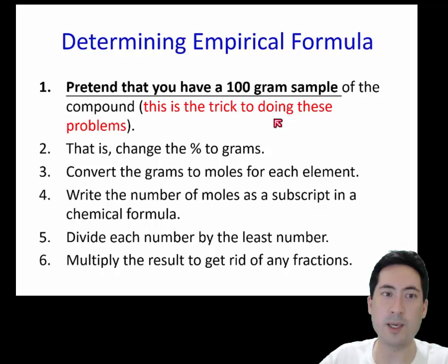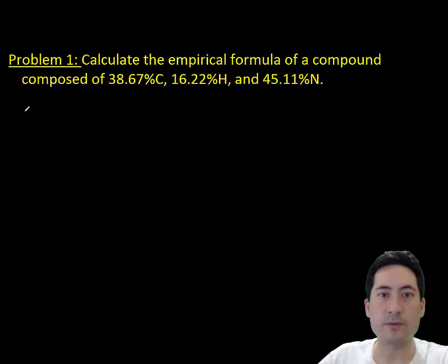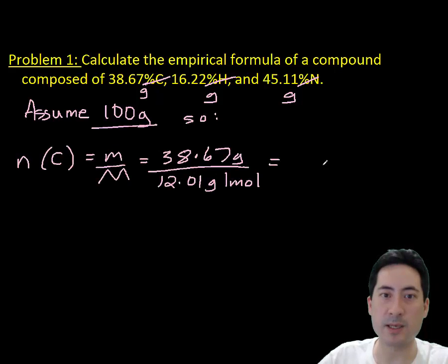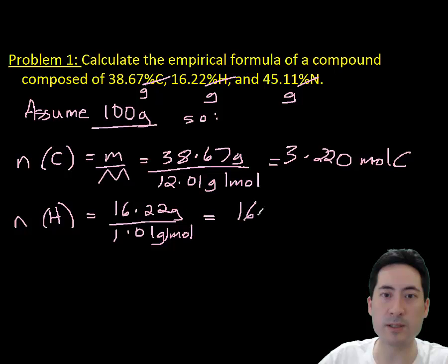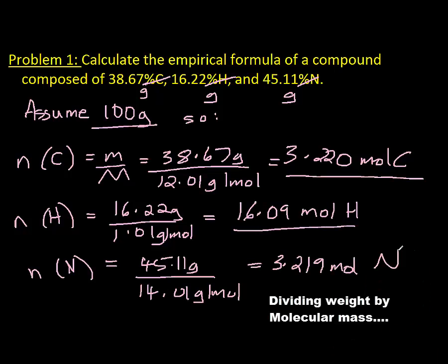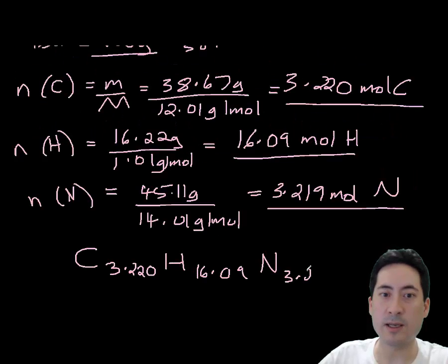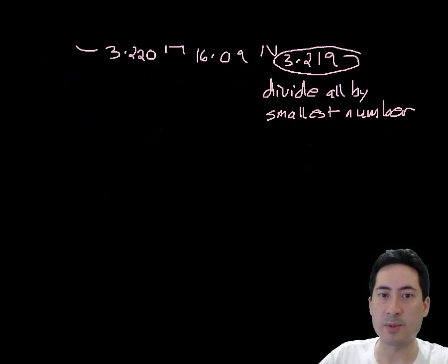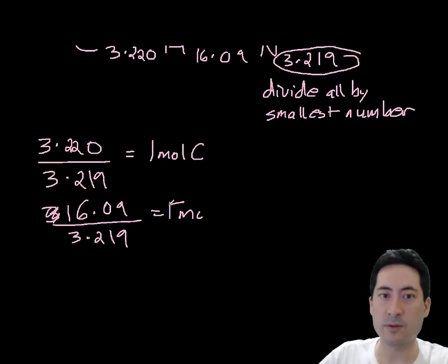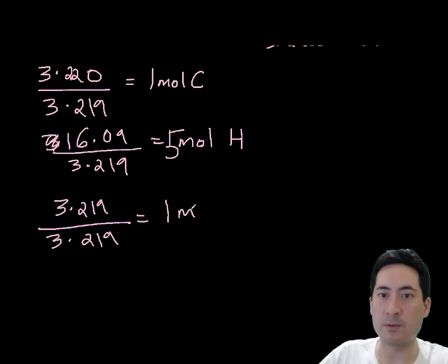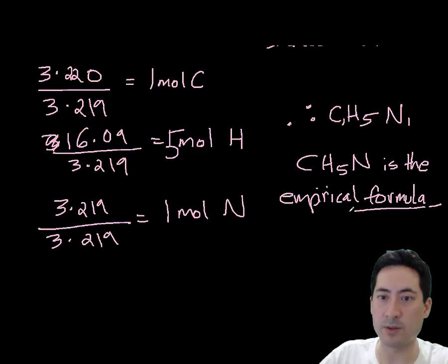Okay, so let's go to a problem. First of all, this is how we go about it, and the most important thing to remember is you're going to be given the percentage of a compound. You can then convert that, a percent by weight, convert that to grams by just assuming there's 100 grams. And then we use our stoichiometry to get our ratios to work out what the empirical and molecular formula are. So going to the first problem, calculate the empirical formula of a compound composed of 38% carbon, 16% hydrogen, and 45% nitrogen. Assuming there's 100 grams, we can then work out the number of moles of each of these things, that gives us 3, 16, and 3 again. So we write that out as a formula, and we divide it by the smallest number, which is 3.219. So if we do that for all of the compounds, we get to whole number ratios, and so we end up with CH5N as the empirical formula.